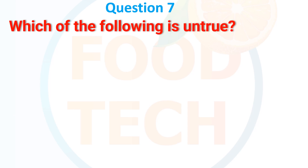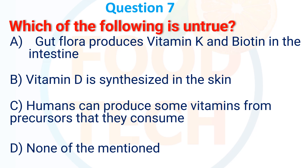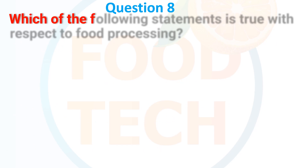Question 7. Which of the following is untrue? A. Gut flora produce vitamin K and biotin in the intestine. B. Vitamin D is synthesized in skin. C. Women can produce some vitamins from the precursor that they consume. D. None of the mentioned. The answer is D: none of the mentioned.